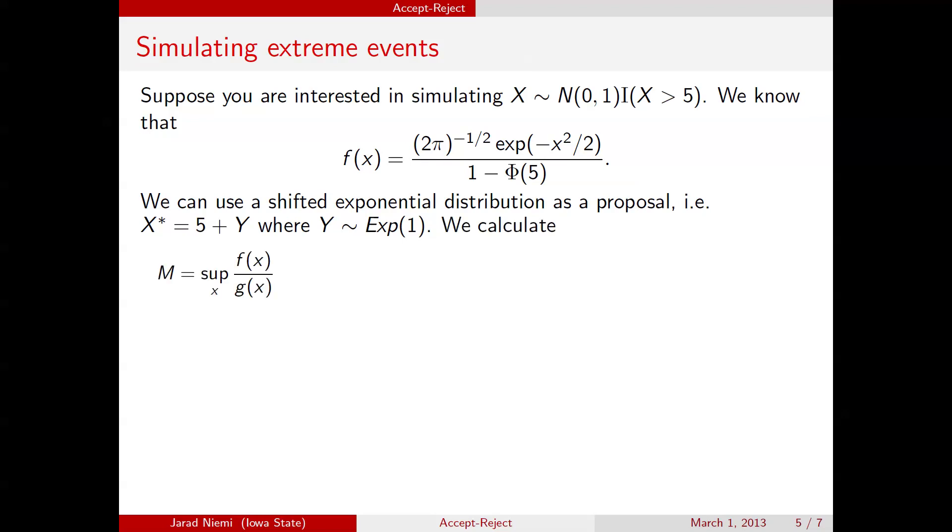Now we need to find m. We can find the optimal m here by taking the sup over this ratio. We plug in the value for this ratio here, where this is now the shifted exponential. And I've also factored out the normalizing constant here for f of x, which does not involve x, and so therefore is not part of the sup. It turns out that this sup will be attained at the left endpoint, when x is actually equal to 5.